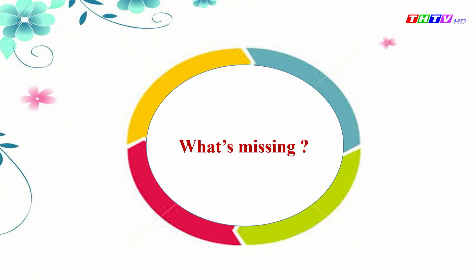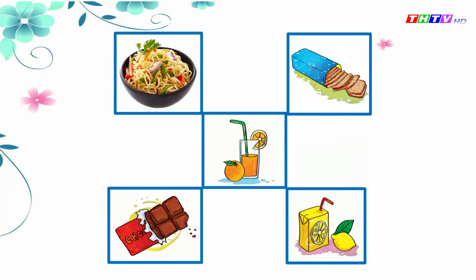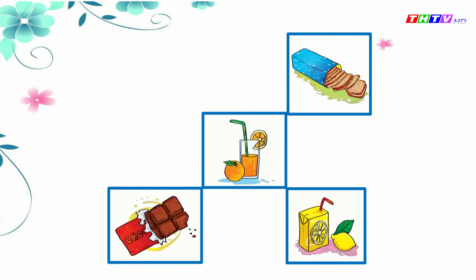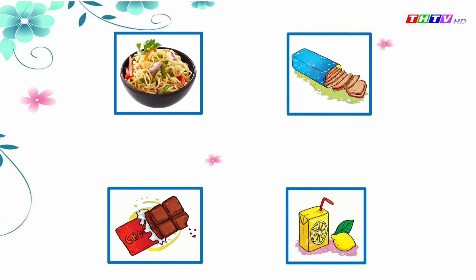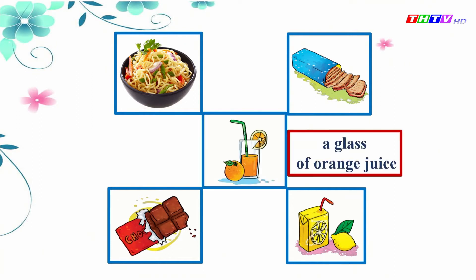It's time for a game, and the game is 'What's Missing?' You look at the picture and tell me which picture is missing. Are you ready? Yes. Let's start. Look. One. Two. Three. What's missing? A glass of orange juice. Good job.